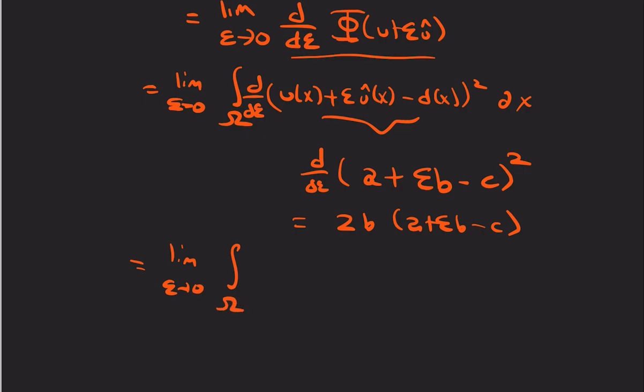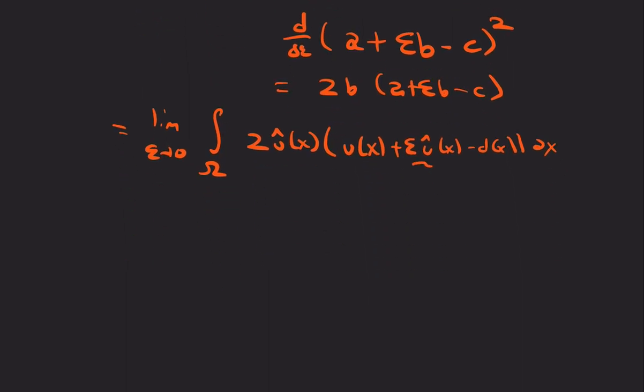So, that's why it's super nice. So, this would be 2 u-hat(x), u(x) + ε u-hat(x) - d(x) dx. And we take the limit as ε goes to 0. And then, this term will get eliminated.